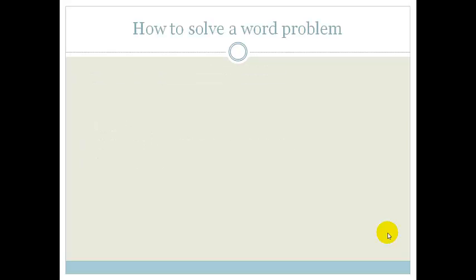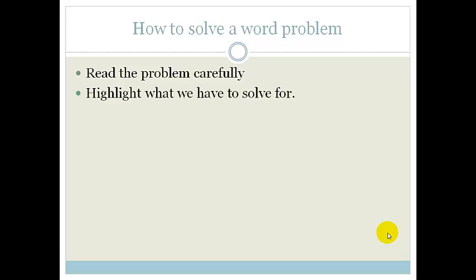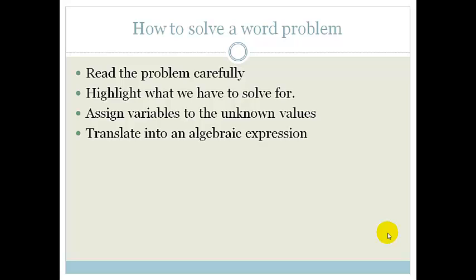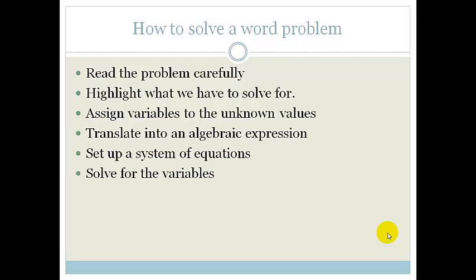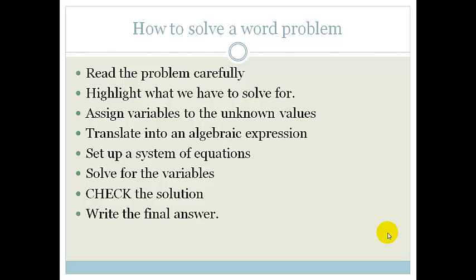First, we need to think about how to solve a word problem. First, read the problem carefully — if we don't read it carefully, we don't get the facts, and if we don't know the facts, we can't solve anything. Next, highlight what we have to solve for, assign variables, translate into an algebraic expression, write out a system of equations, solve those equations, always check the solution, and then write out the final answer.